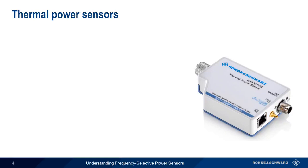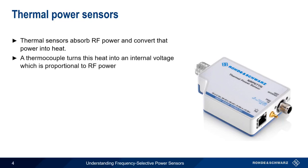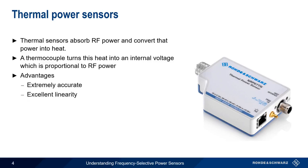We'll start with thermal sensors. Thermal sensors measure RF power by absorbing it and converting it into heat. A thermocouple then turns this heat into an internal voltage that's proportional to the RF power. The biggest advantage of a thermal power sensor is that it's extremely accurate, and they also have excellent linearity, making them the sensor of choice when high precision is required.